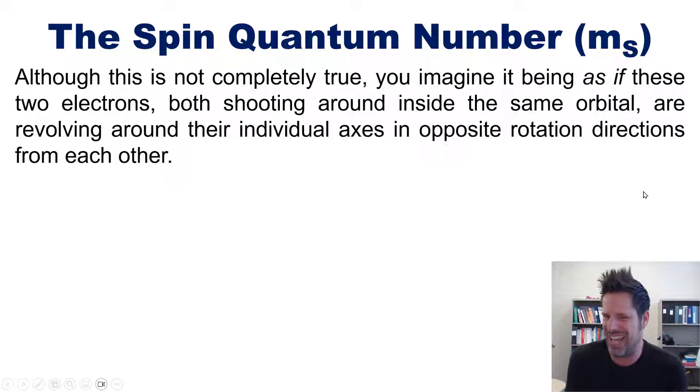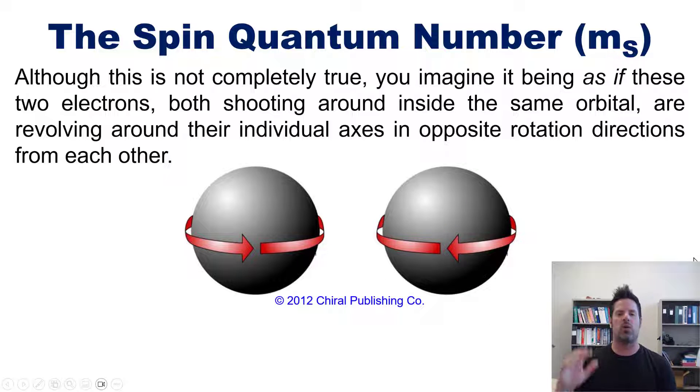Although this is not completely accurate, you can imagine this as if these two electrons, both moving around inside the same orbital around the same nucleus, are revolving around their individual axes in opposite rotation directions from each other—one clockwise and one counterclockwise. This is one way to sort of wrap your head around it.